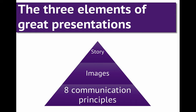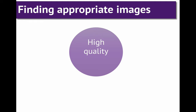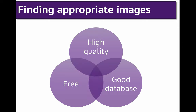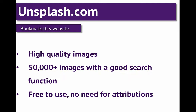So, as I mentioned, there are three essential elements of great presentations. I've just gone through the eight communication principles, and the next point is getting great images. There are three important things, especially as scientists: you want images that are high quality, from a good database where it's easy to search using key terms, and free. One great example is unsplash.com — bookmark this website. There are over 50,000 images with a good search function, and it's free to use with no need for attributions. Every single image in this presentation came from unsplash.com.